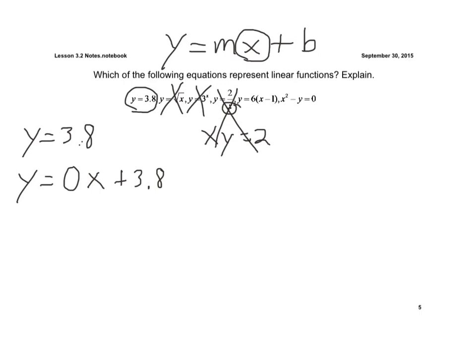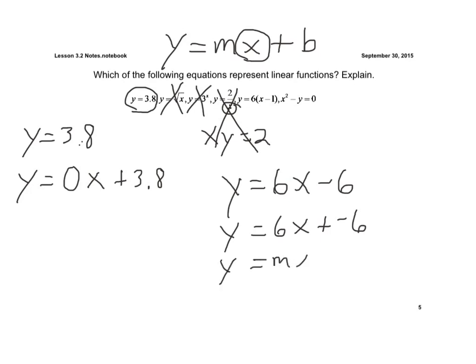The next one — if I distribute the 6 through, I get y equals 6x minus 6. I could write it as y equals 6 times x plus a negative 6. So y equals m times x plus b works, where m is 6 and b is negative 6. So that is a linear function.